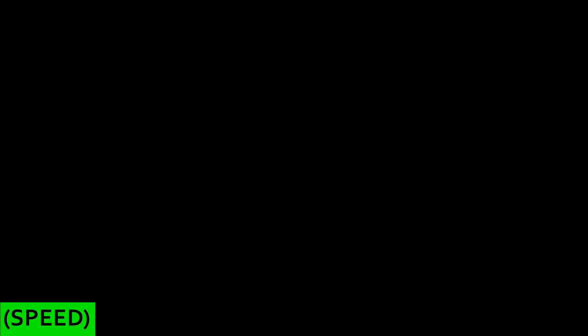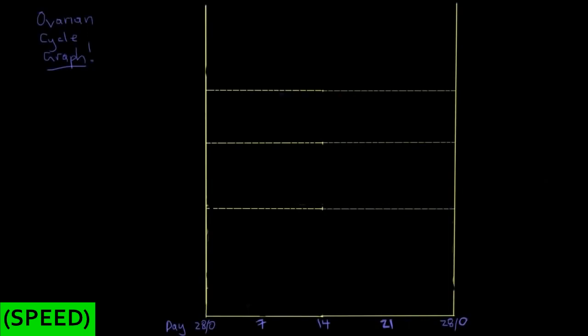There's a handy graph called the ovarian cycle graph that you'll see if you're studying female reproductive physiology. It's really helpful in understanding and visualizing what exactly is going on in the body during each reproductive cycle. The x-axis is time, constrained to 28 days — that's how long each reproductive cycle is. Day 28 and day 0 are the same day; once you reach day 28 of one cycle you're on day 0 of the next. Ovulation happens at day 14.